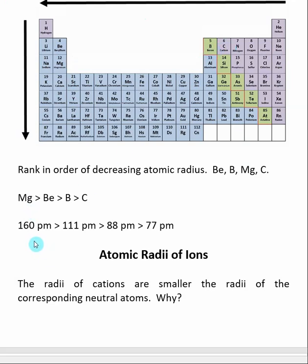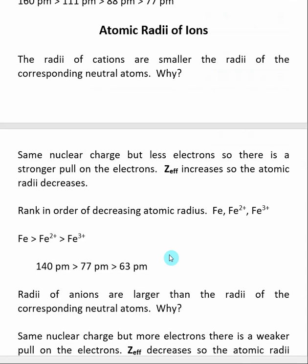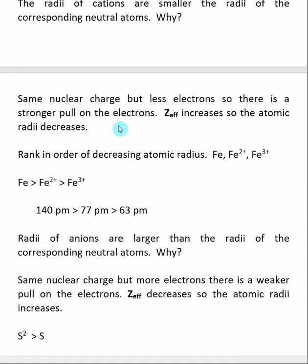This is backed up by experimental evidence. If you look at the atomic radius of these atoms, magnesium has an atomic radius of 160 picometers, where carbon has an atomic radius of 77 picometers. So these periodic trends are an estimate, but they are generally true and backed up by experimental data. So what happens when we start adding and removing electrons from an atom? It comes down to Z-effective.